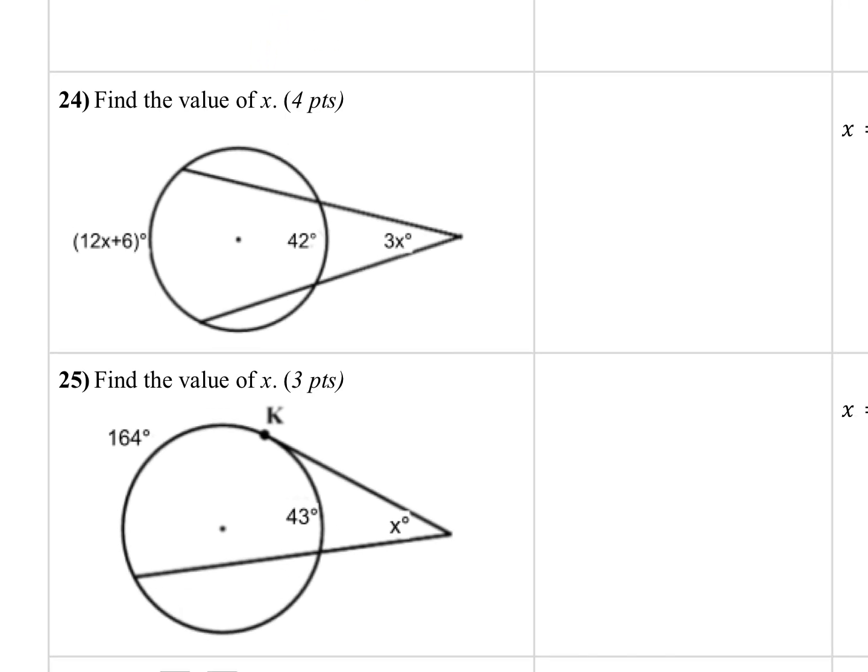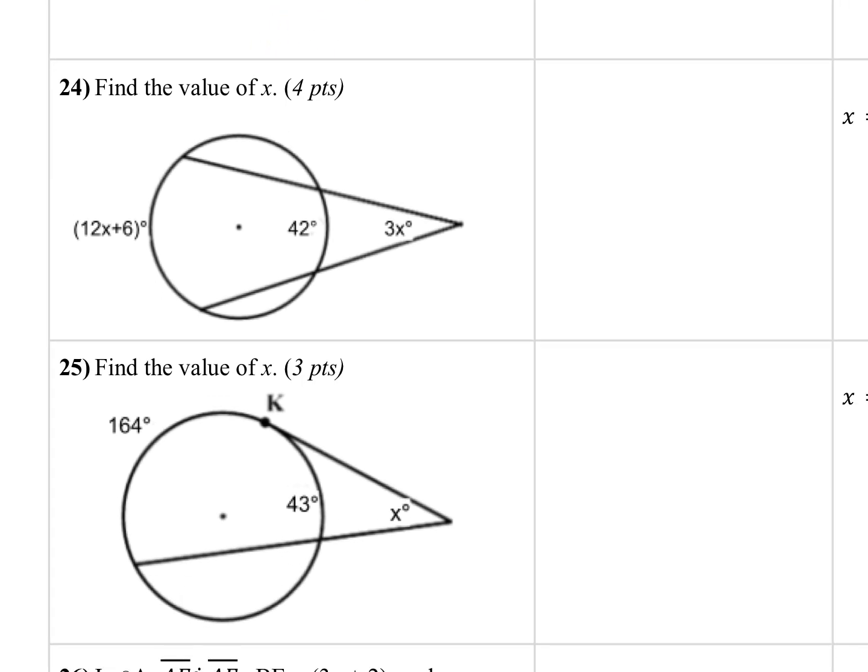On our next problem, it is similar, but not exactly the same. This time my vertex, again, is outside the circle. So it's a secant-secant angle with the vertex outside the circle. That's where the similarities end. Then I know that because the vertex is outside, it's half the difference, half the difference of the two arcs that are created by the secant-secant angle.